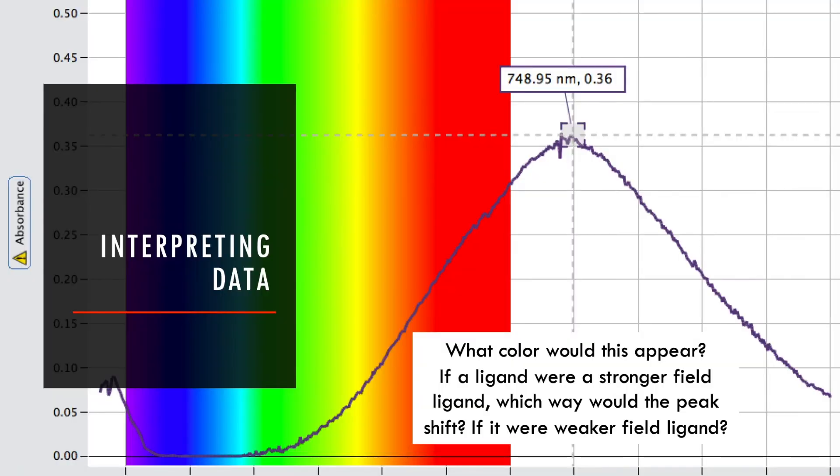Okay, so this is what a spectrum might look like for one of the coordination compounds that you're going to synthesize in lab, where it has this peak over here. It's actually in the infrared, but it has significant absorbance in the red into the orange. And so what color would this appear if we were looking at it? Well, we're probably going to see the color that's transmitted, which is like this blue, blue-green color here. Now, what if we had a stronger field ligand or a weaker field ligand? Which way do we expect the peak to shift, to the left or to the right, and why? Think about that for a minute and pause the video.